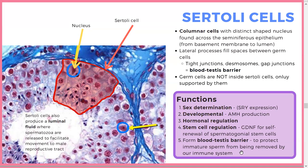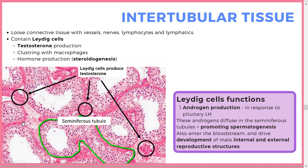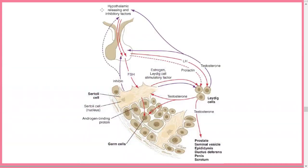In between the tubules is the intertubular tissue, whose main protagonists are the Leydig cells — they produce testosterone and initiate steroidogenesis and ultimately spermatogenesis through androgen production. They have little crystals inside, which is how you recognize them. The hypothalamus releases LH and FSH: FSH goes to Sertoli cells, LH goes directly to Leydig cells which then produce testosterone. Testosterone helps germ cells become spermatozoa and also drives external genitalia development.